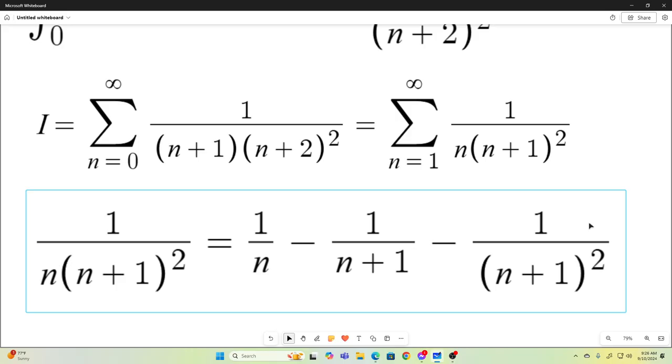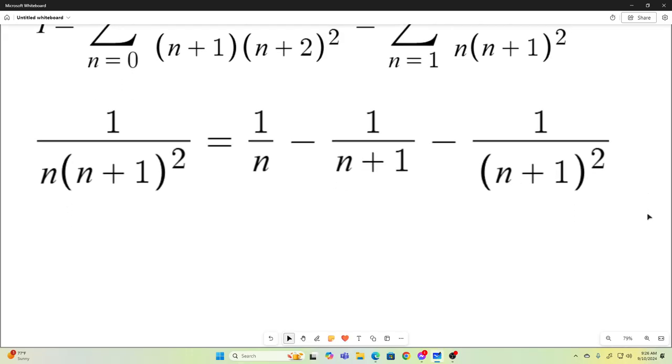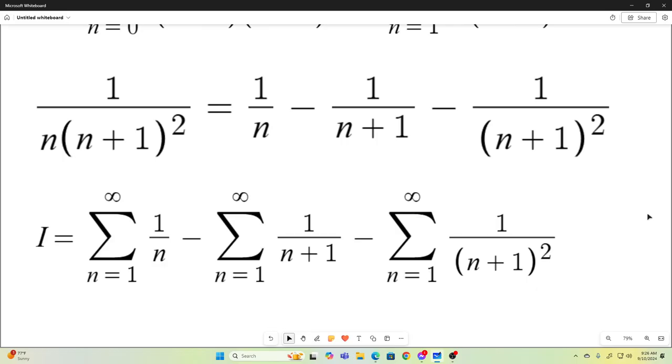Now, that 1 over n times n plus 1 squared can be decomposed using partial fractions into the following. It's just 1 over n minus 1 over n plus 1 minus 1 over n plus 1 all squared. So, I is now equal to the sum of the following three sums.